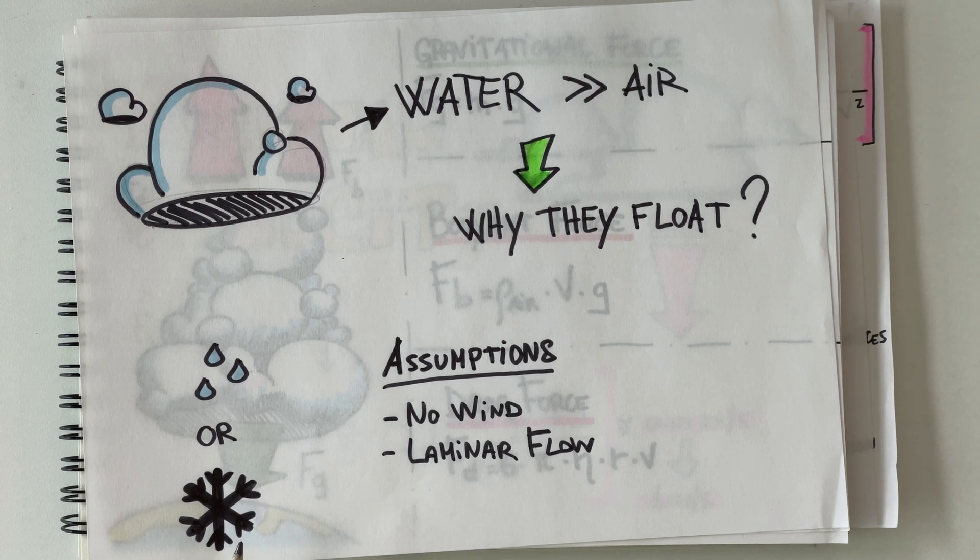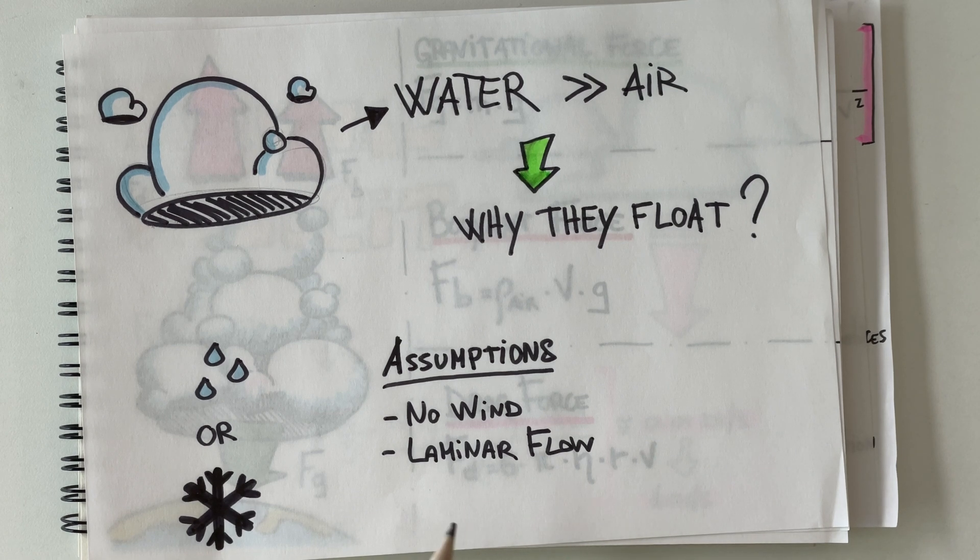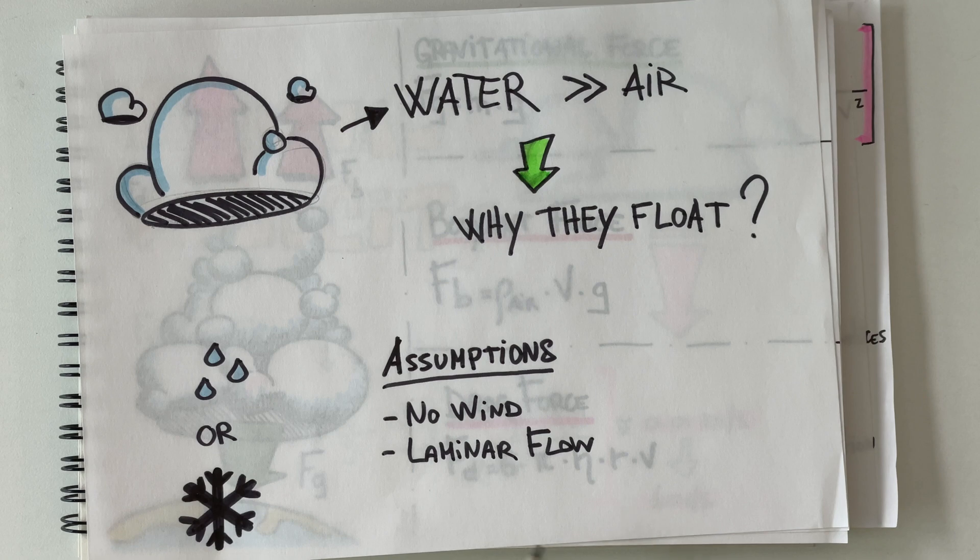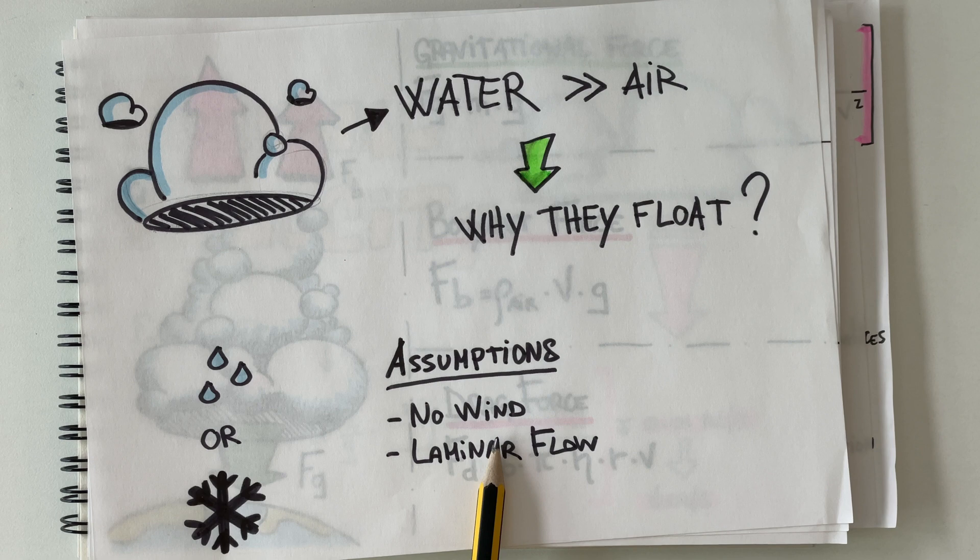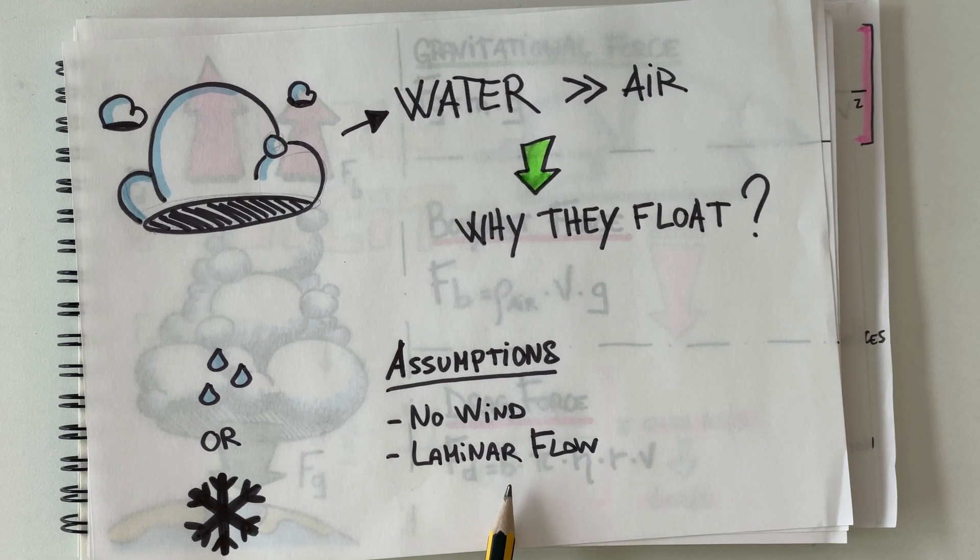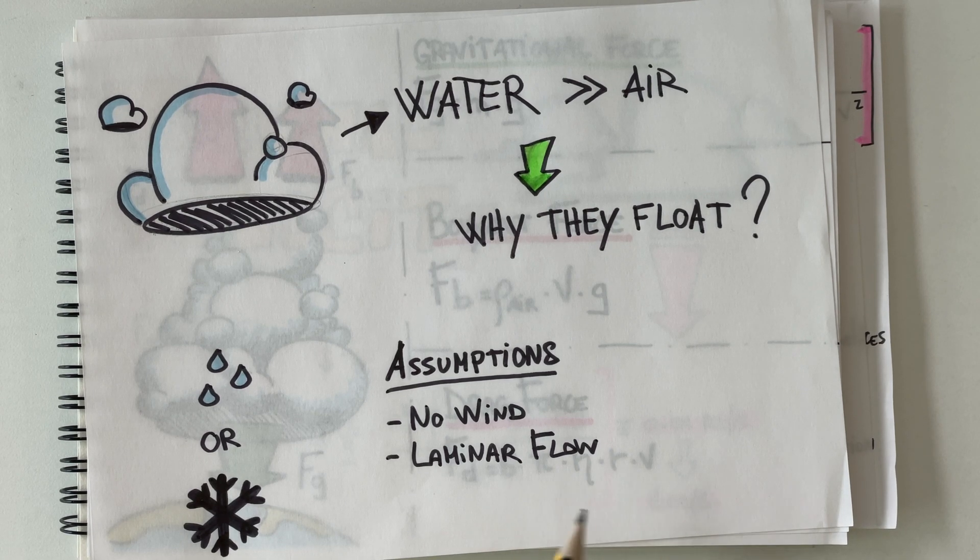To understand why a cloud remains suspended in the sky and does not fall, we need to consider the forces acting on it. Imagine an ideal scenario. Let's assume that there are no significant air currents, so no wind, and that the flow is laminar, so smooth and without any turbulence.